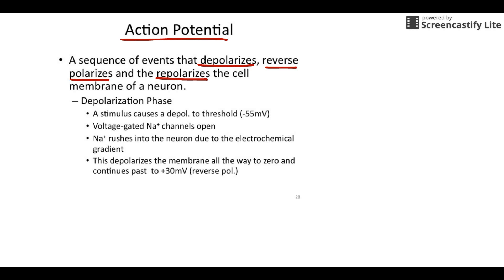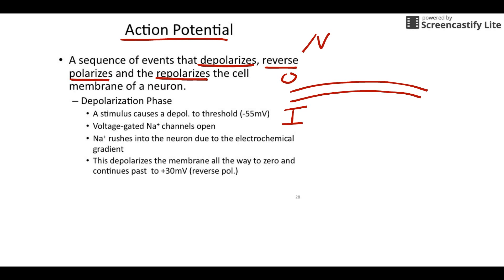Generally, what we're looking at — remember at rest, resting potential — our neuron kind of looks like this. Here's our inside, here's our outside. We have most of the sodium outside, most of the potassium inside, and the inside is the negative side. The outside is the positive side. And remember, our charge is negative 70 millivolts.